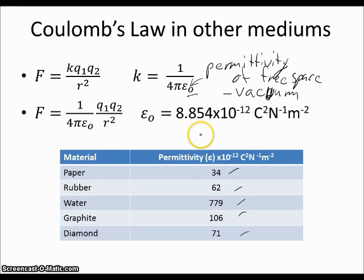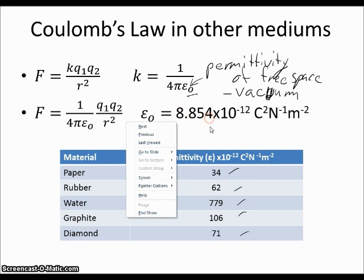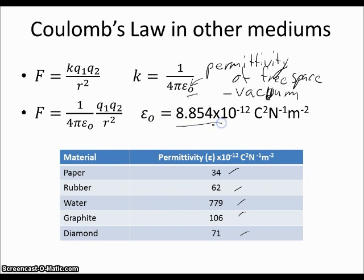And so in the case of the permittivity of free space, epsilon not is equal to 8.854 times 10 to the minus 12, where the other permittivity values are slightly higher. Paper is 34, you can get all the way up in this set of examples to 779, and because it's on the bottom of this fraction or ratio, that means the higher the permittivity value, the less force will be exerted.